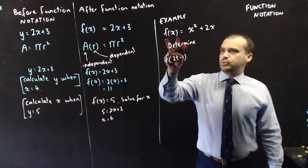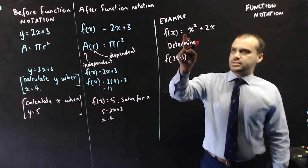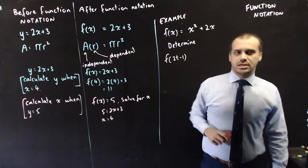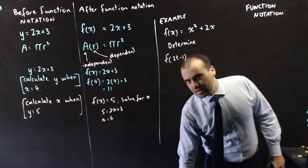So an example would be, here's a function, f of x equals x squared plus 2x. Determine f of 2t minus 1. So what that says is, in our function x, replace x with 2t minus 1.